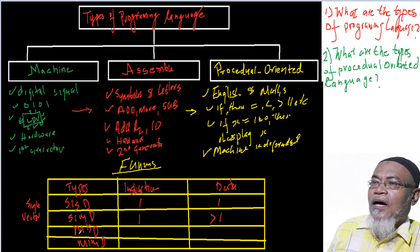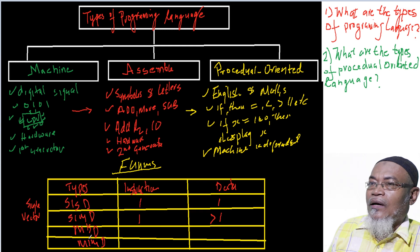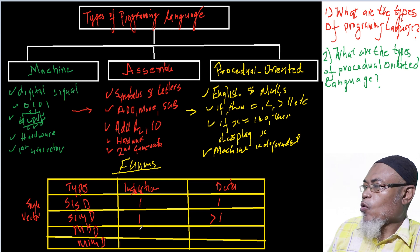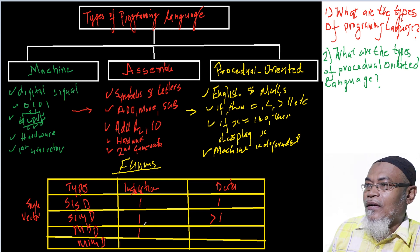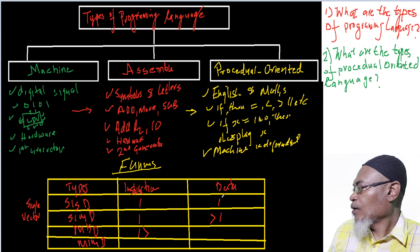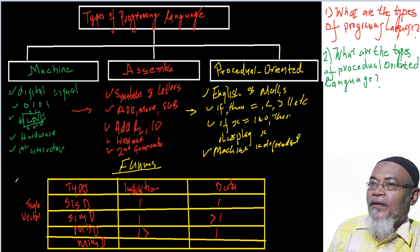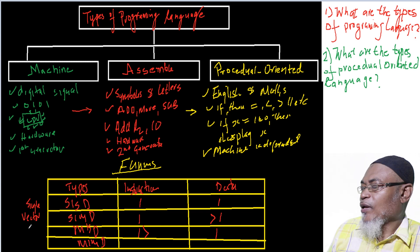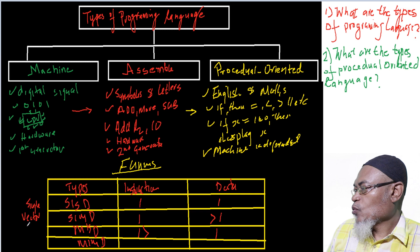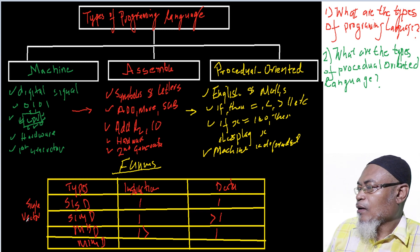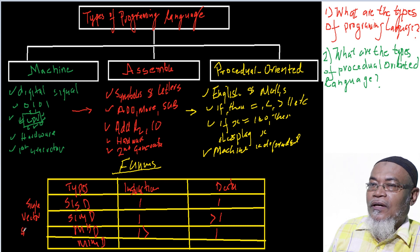The third type is MISD, which stands for Multiple Instruction, Single Data. In this architecture, more than one instruction acts on one data stream. In reality, there are no major applications that use MISD today, but a stream processor would be an example.